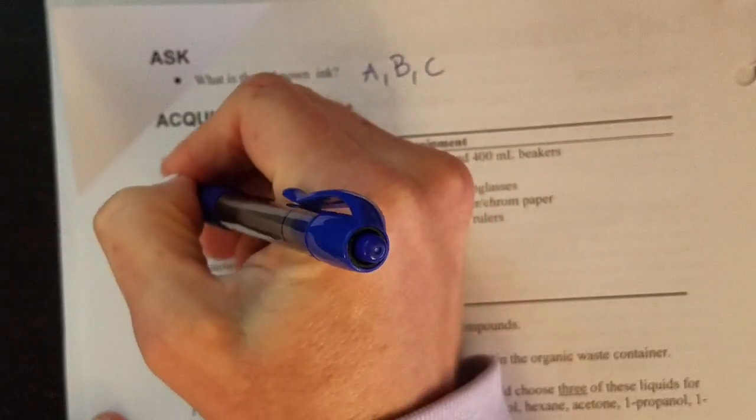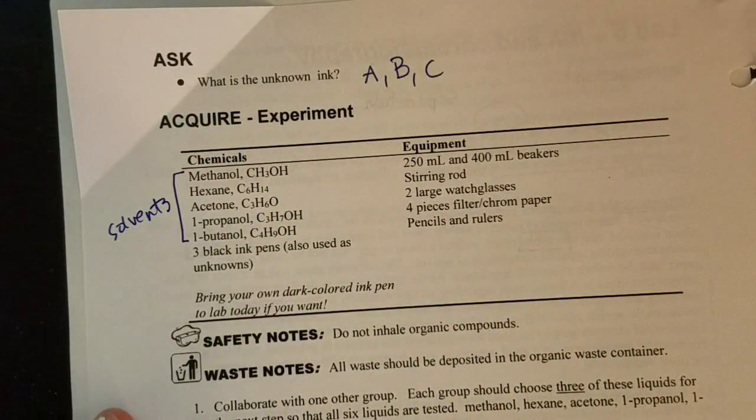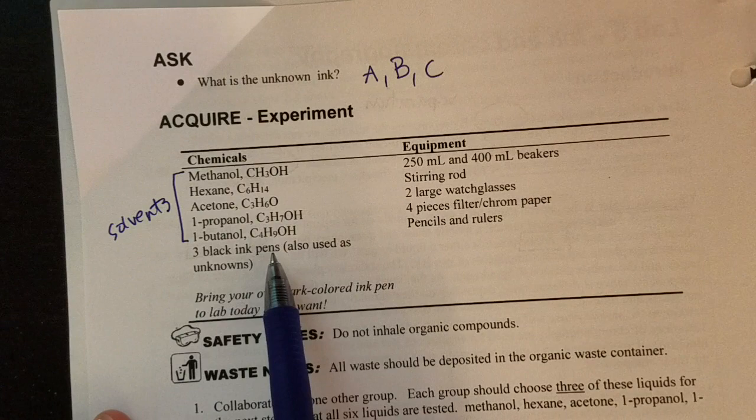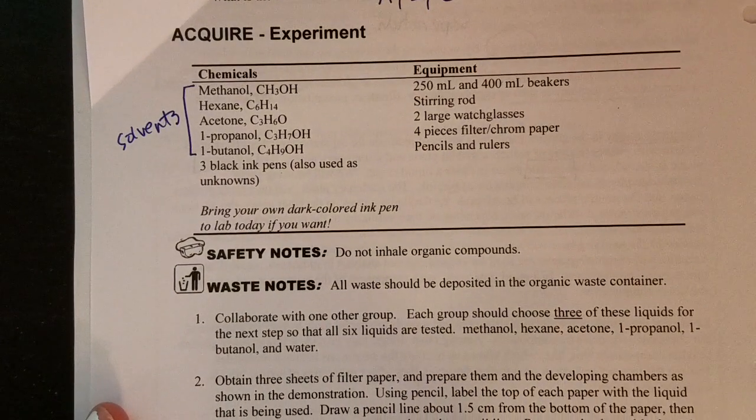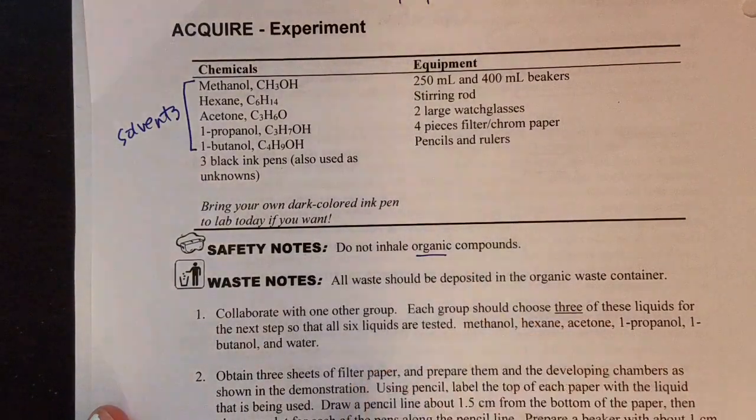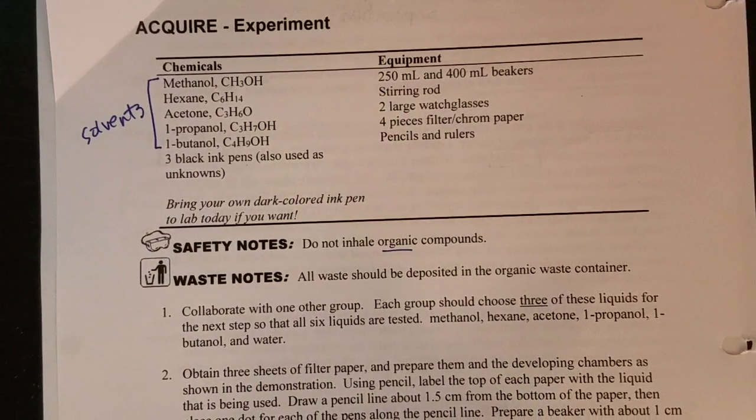Here's the chemicals that you're going to use. So these are going to be your solvents or your mobile phases here. We'll have three black ink pens, which you'll see in the video later. And then here's some of the other equipment that was collected for you. All of these compounds are organic compounds. So we would have a special waste container for them and we would be careful not to inhale them.